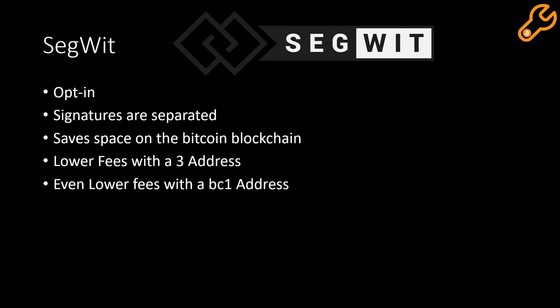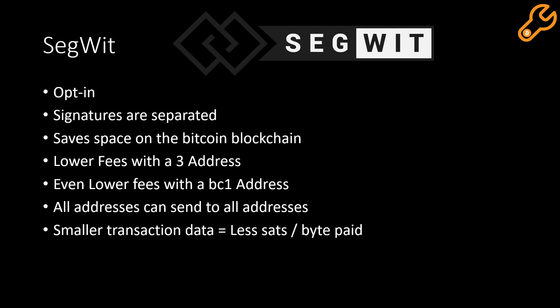You get lower fees with the three address and even lower fees with a bc1 address. Thankfully, all addresses can send to all addresses — the legacy address can send to the three and the bc1 address, the three address can send to any other address, and the bc1 address can send to any other address. Thanks to the transaction data being smaller, that means less satoshis per byte you have to pay, meaning less fees overall.